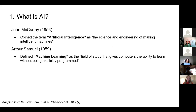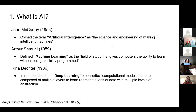We also have Arthur Samuel, who popularized the term machine learning. Samuel created an experiment pitting two computers against each other in a game of checkers. He assigned higher scores to advantageous board positions — more kings, pieces on the opposite side — and simply gave the computer a task: optimize and get the maximum value by mimicking these board positions. He gave computers the ability to learn without being explicitly programmed to. And we have Rina Dechter, the first to use the term 'deep learning' in scientific literature, describing computational models composed of multiple layers of learning representations with multiple levels of abstraction.